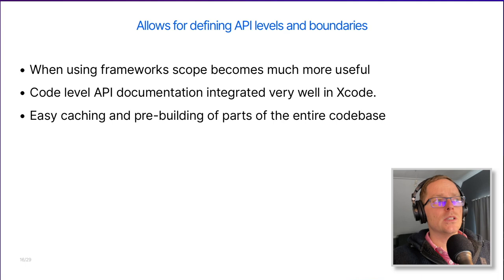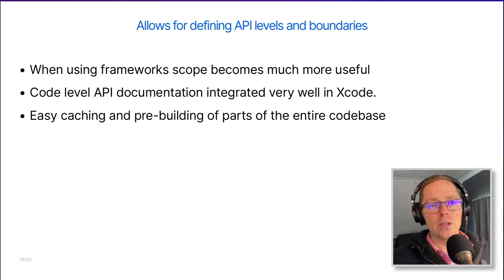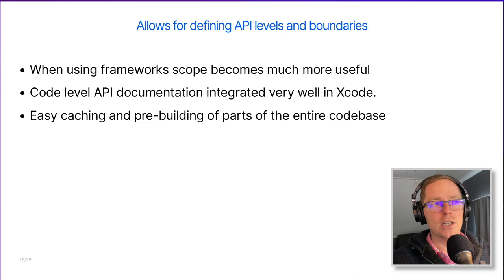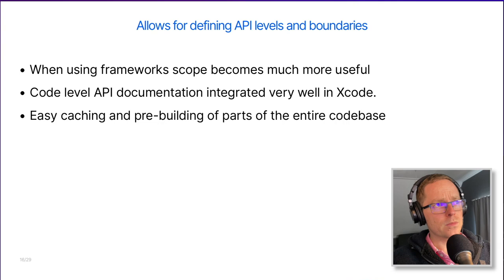When using framework-based development, scope becomes way more useful within your codebase. Not only do you have public and private, but you can also make things private within a framework. If a colleague wants to define some weird extension on String, as long as they do it in their own framework with default scope, you're not bothered by that. If it's a utility useful for everybody, you can put it in a framework, mark it public, and it's available for everybody — provided they depend on and import that framework. The API documentation that you can put on your interfaces, classes, and structs integrates very well with Xcode, so if you import a framework with good doc comments it's quite easy to discover what a framework does right in your Xcode editor.